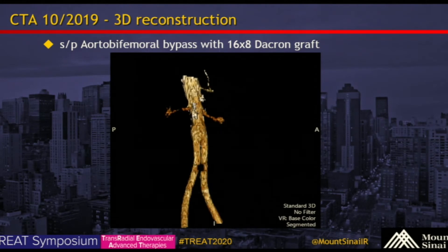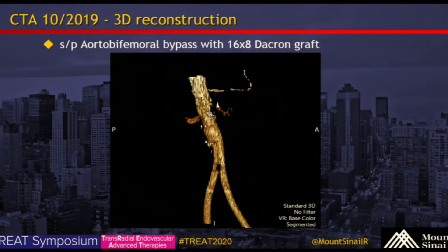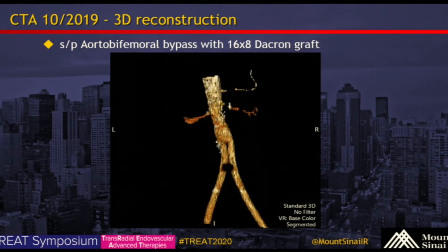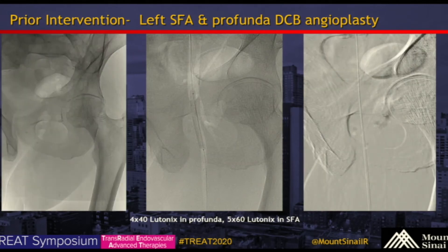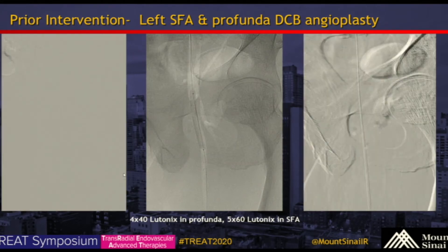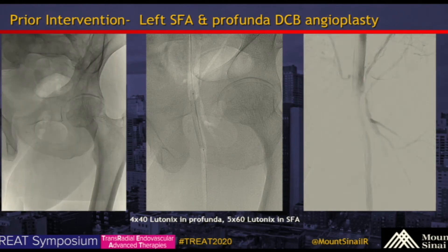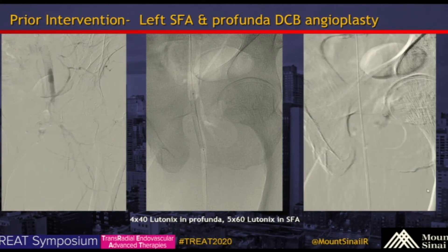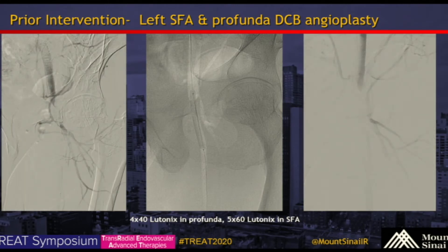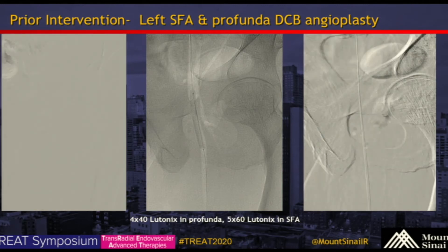Here's the 3D reconstructive image. After the aorta-bifemoral bypass, you see there's contrast opacification within the aorta and the two limbs. In the interim, the patient still had persistent claudication, and we did notice that narrowing at the anastomosis on the left. So he subsequently underwent a left SFA and profunda DCV angioplasty using Lutonics balloons. On the screen left is the completion angiogram. Although they look small in caliber, there's a discrepancy between the graft and the native vessels, which is expected.